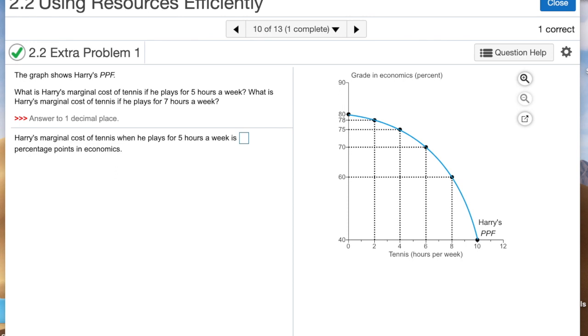So we have Harry, and Harry can use his time, his resources, to either study for his economics exams and hopefully do better in his class, or Harry can spend his time playing tennis. You can see his grade in economics is here on the vertical axis and his hours playing tennis are down here on the horizontal. The first question says, what's Harry's marginal cost of tennis if he plays for five hours a week? What is it if he plays for seven hours a week?